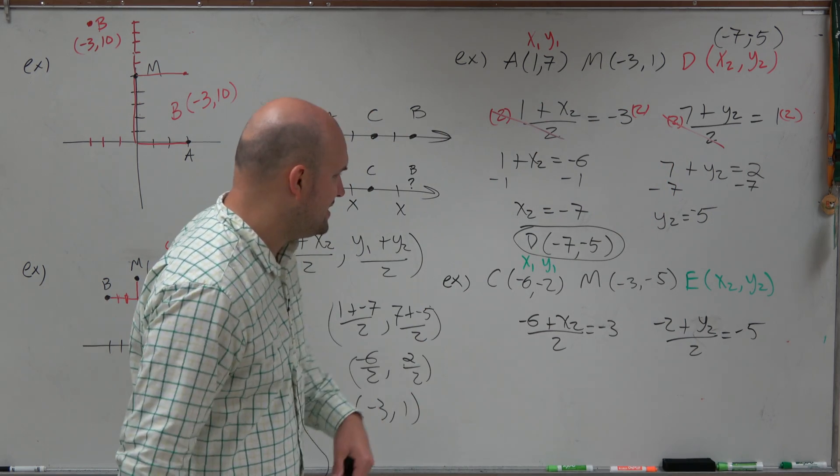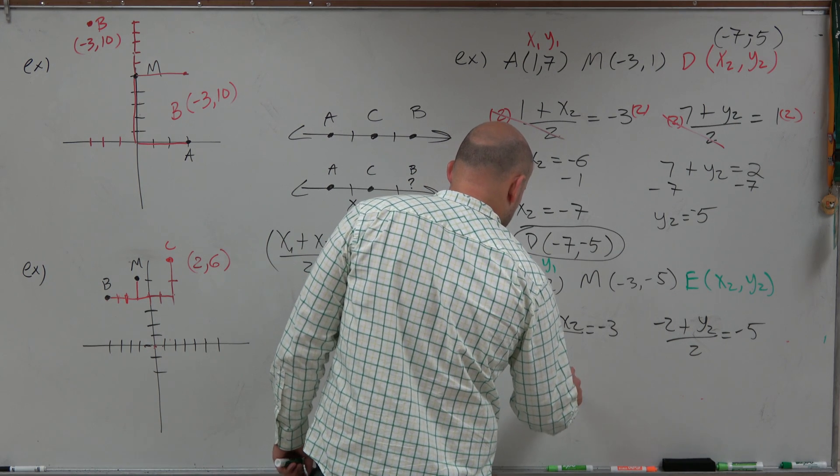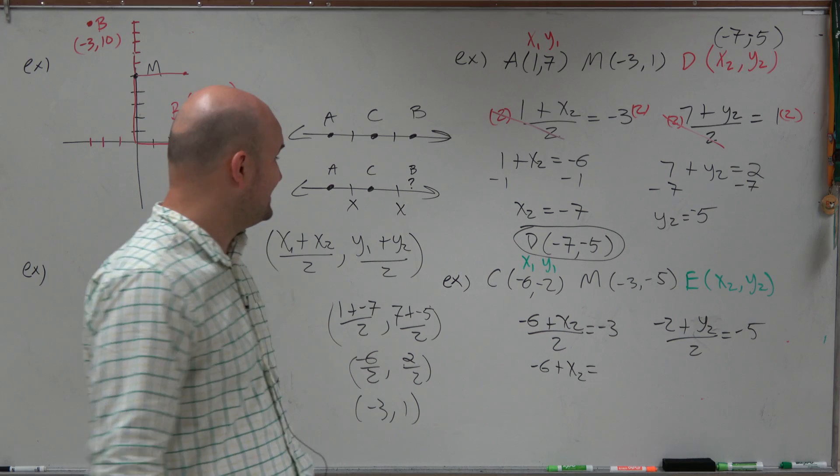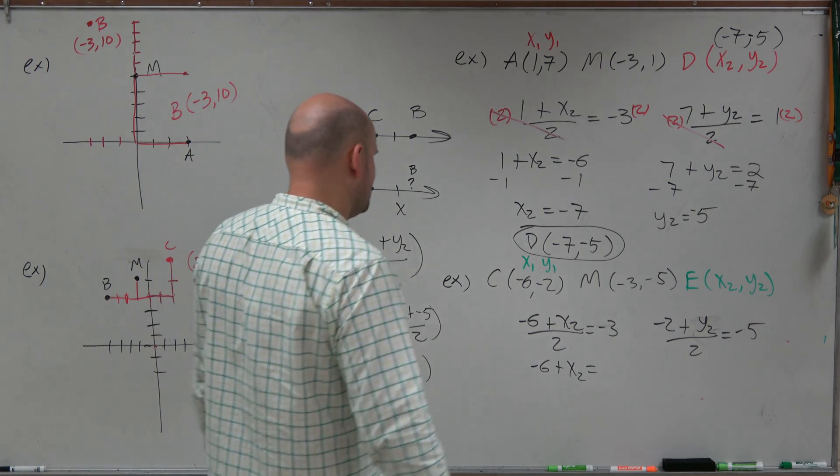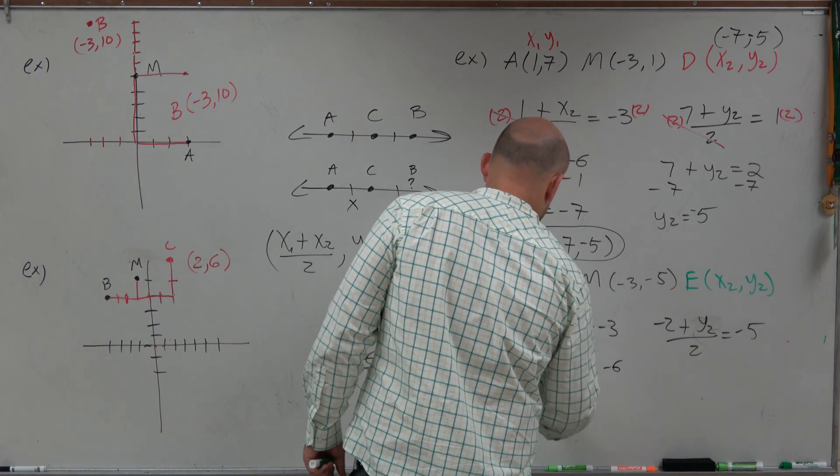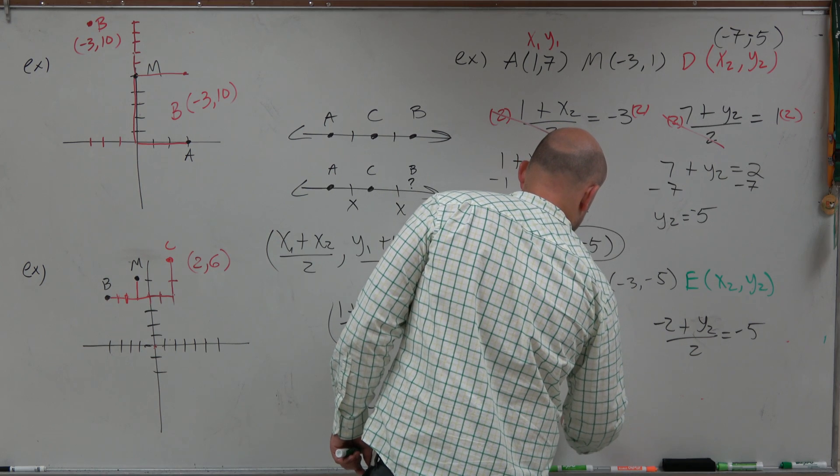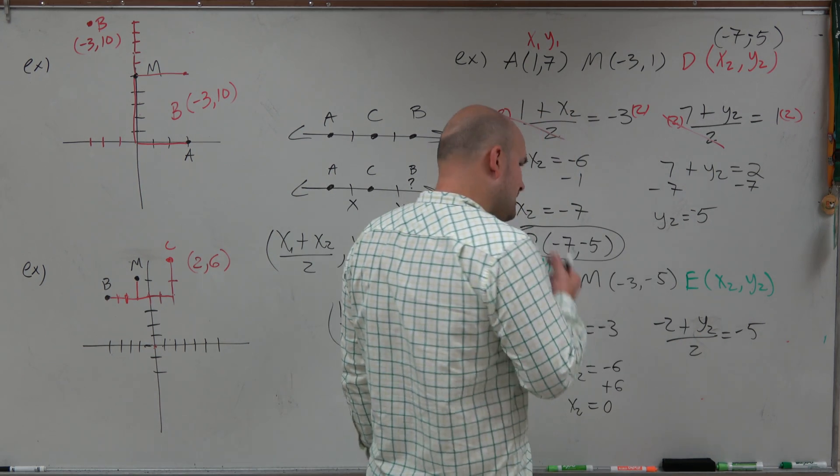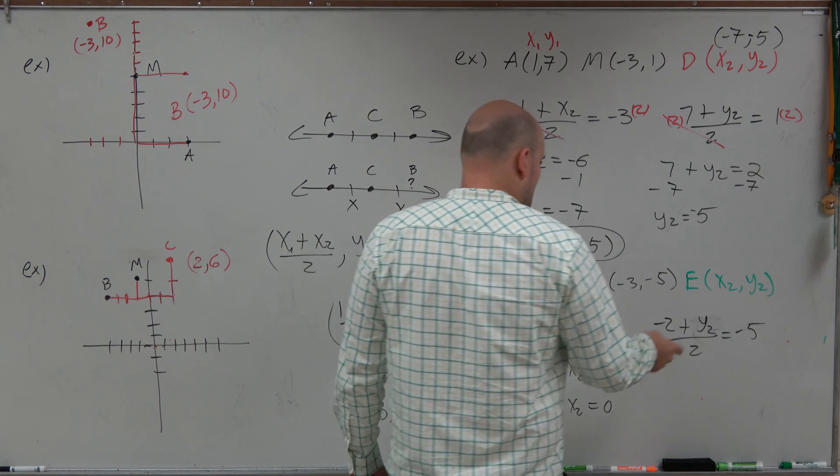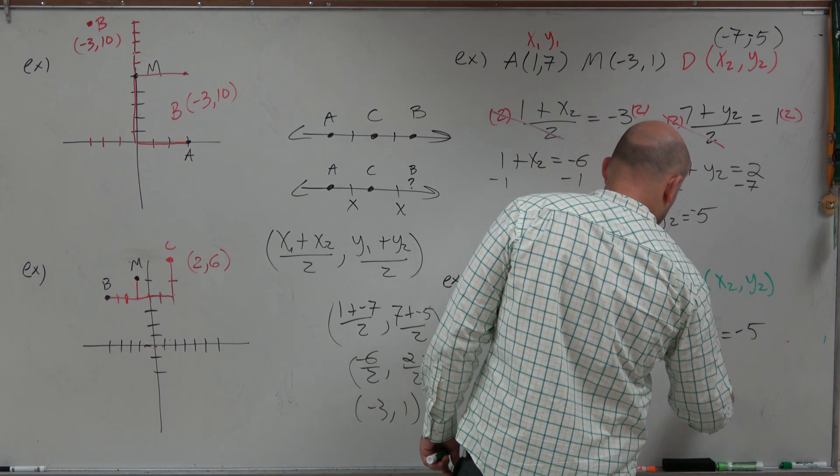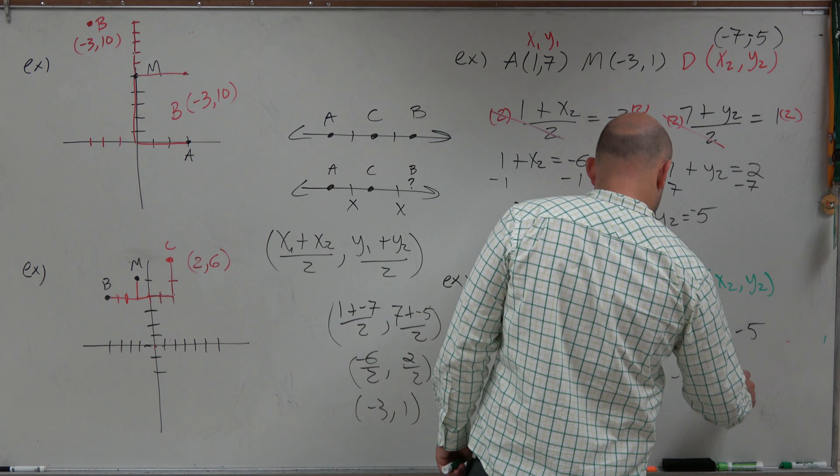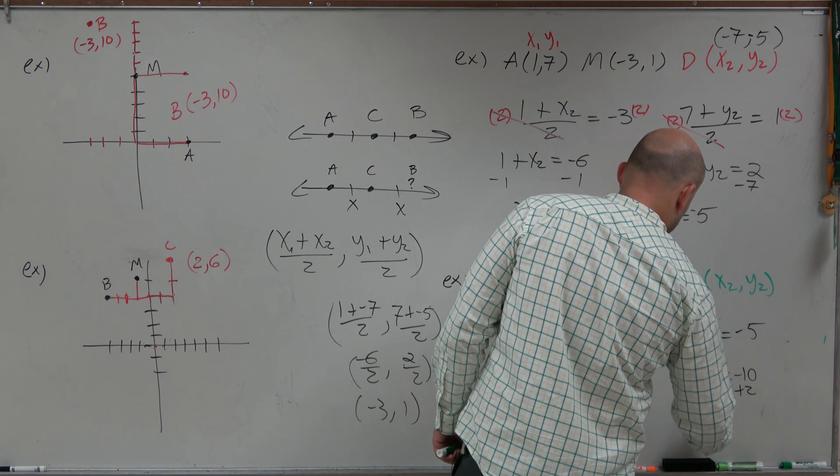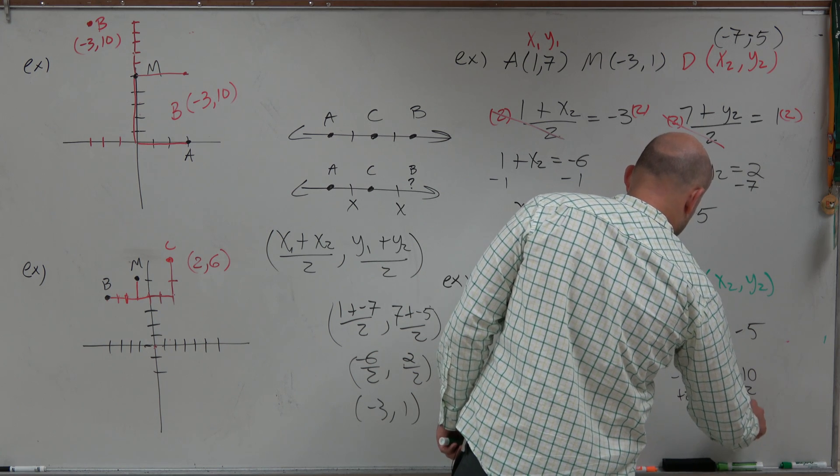I'll multiply by 2 on both sides. I'm just not going to show all my inverse operations on this one. Multiply by 2 on both sides. That's going to give me a negative 6. Add 6, add 6, x2 equals 0. And then over here, I am going to multiply by 2. So I have negative 2 plus y2 equals negative 10. Add 2, add 2. y2 equals negative 8.